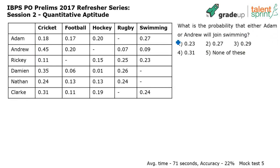The next question: what is the probability that either Adam or Andrew will join swimming? The average time spent on this was 71 seconds and accuracy was only 22 percent. It's important to get the meaning of this question clearly — either Adam or Andrew should join swimming, but not both.